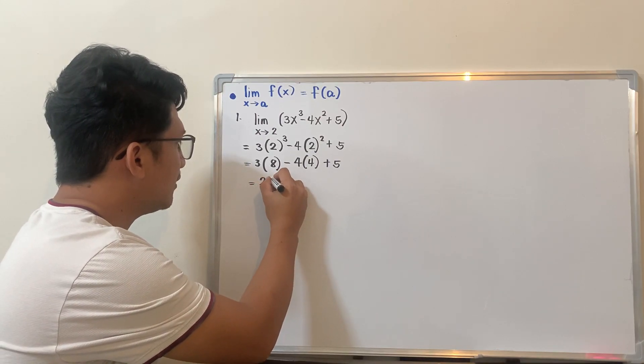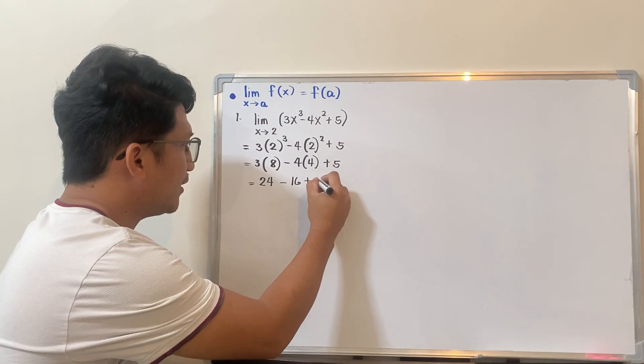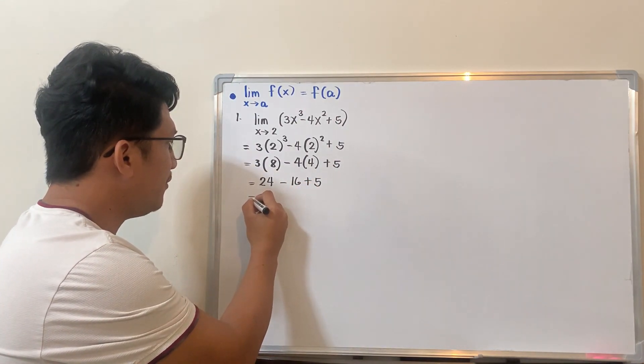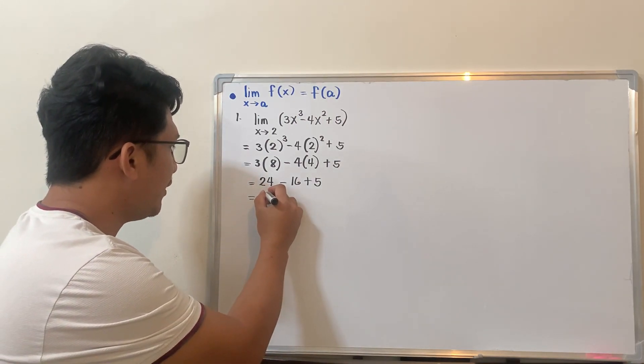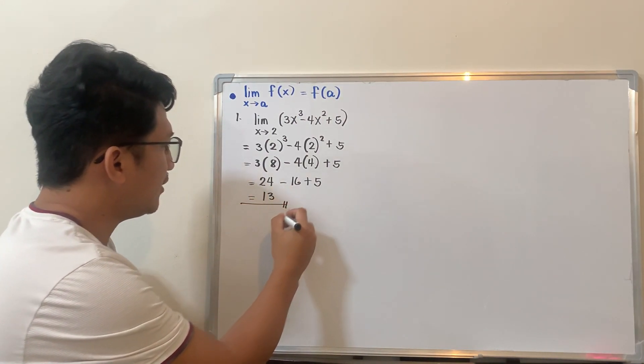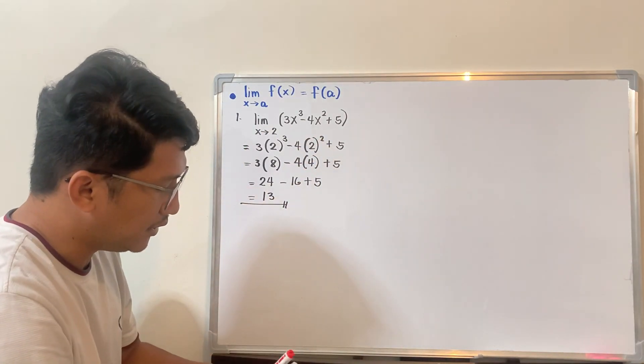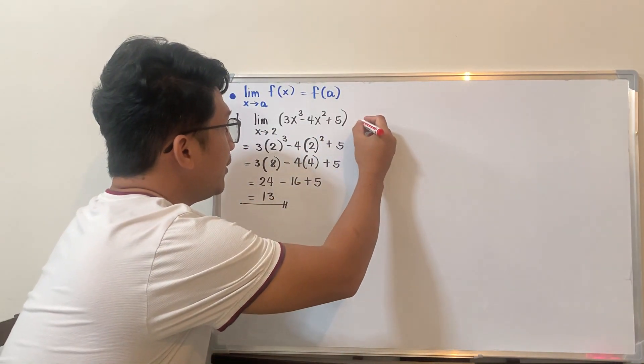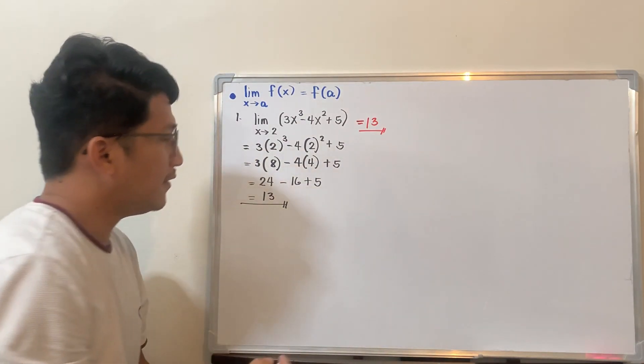This will be 3 times 8 is 24, minus 4 times 4 is 16 plus 5. So from here, 24 minus 16 is 8 plus 5 is 13. So this will be your limit. This is the limit of the function. It's equal to 13.